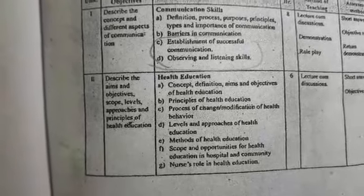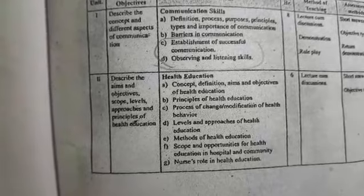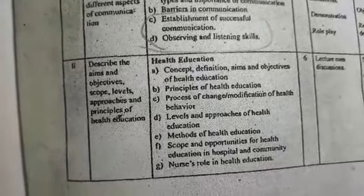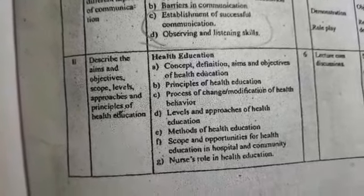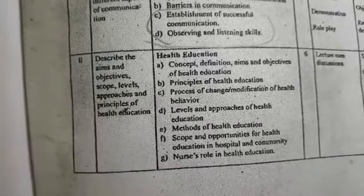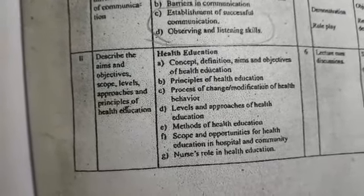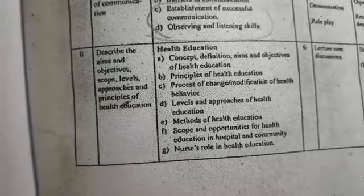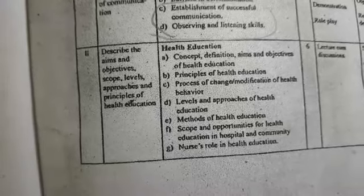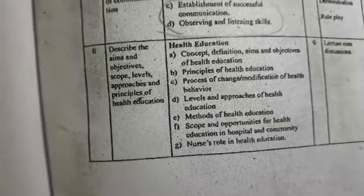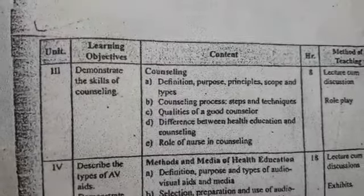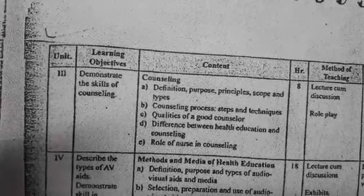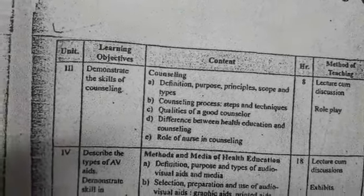Unit 2 is based on Health Education. Part A covers concept of health education, definition, aim, and objectives of health education. Part B covers principles of health education. Part C covers process of change, modification of health behavior, levels and approaches of health education, methods of health education, scope and opportunity for health education in hospital and community, and nurses' role in health education.